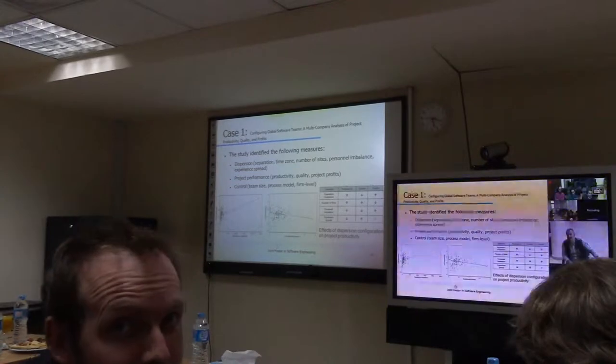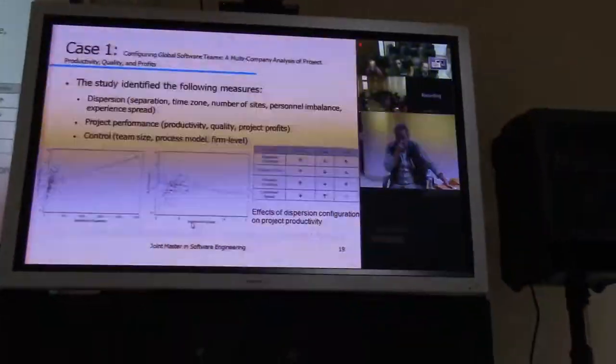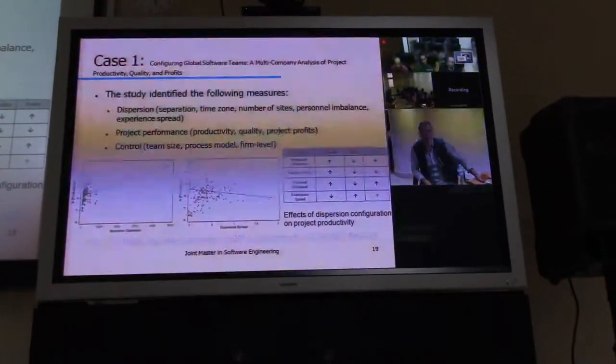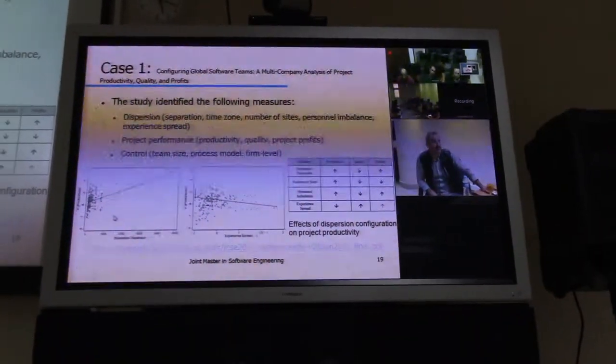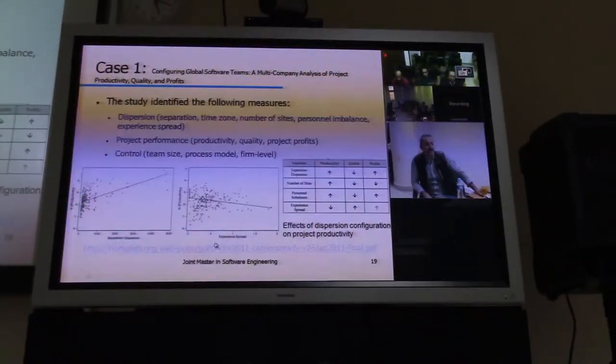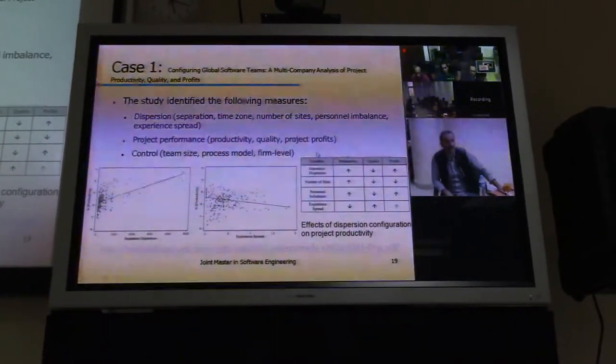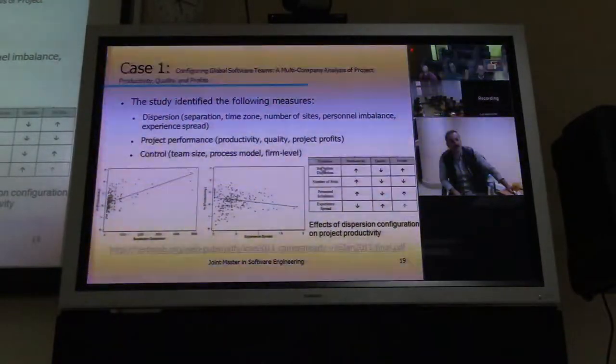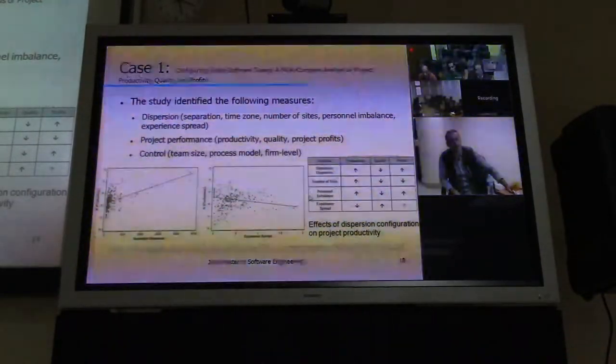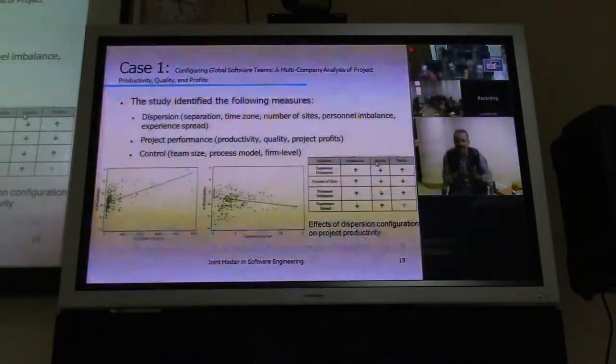As part of the output they have shown, how the separation dispersion affects the productivity, how the experience spread affects the productivity and so on. That is with linear regression. But what they've done is like they've done variables such as dispersion, number of sites, personal imbalance and how it affects productivity, quality and profits.